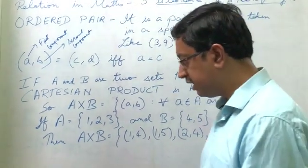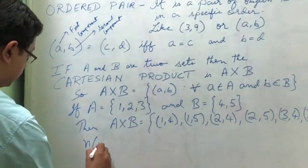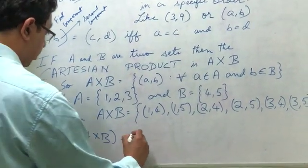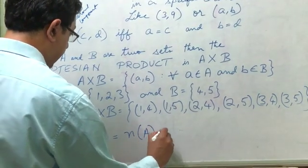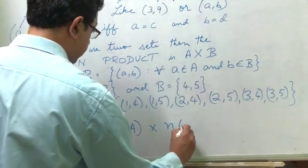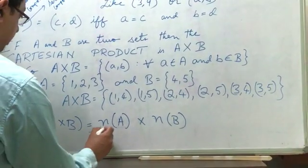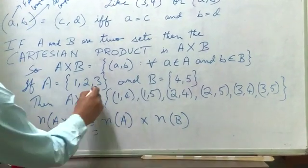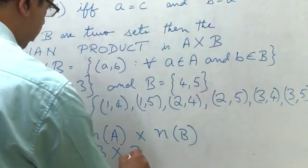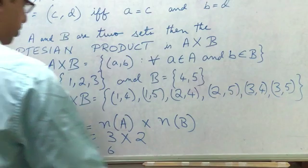Now one very interesting thing that you must know is the number of elements of A×B will be equal to the number of elements of set A into, this is not cross, this is into, the number of elements of set B. Now if you take a look, in this particular case, set A has got 3 elements and set B has got 2 elements which is equal to 6.